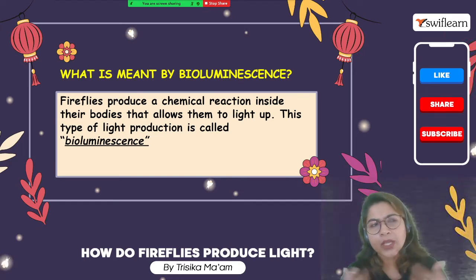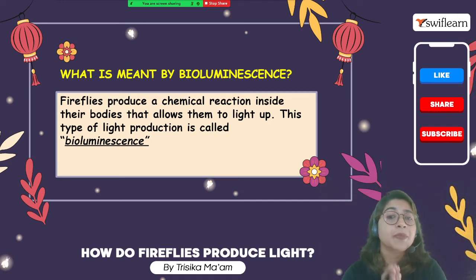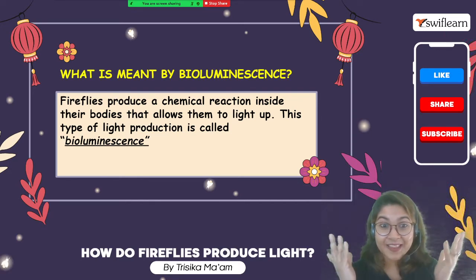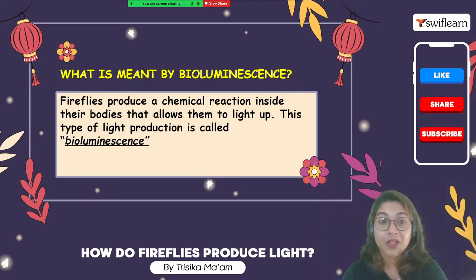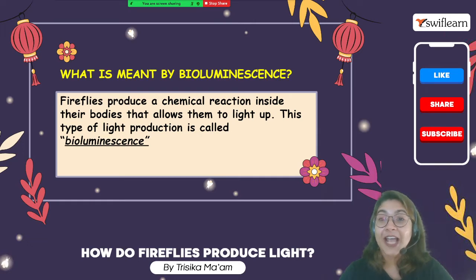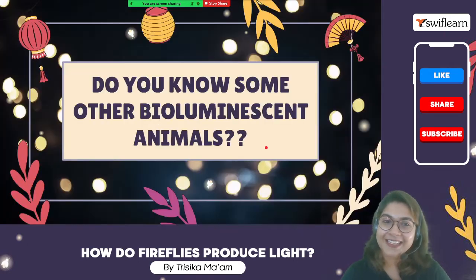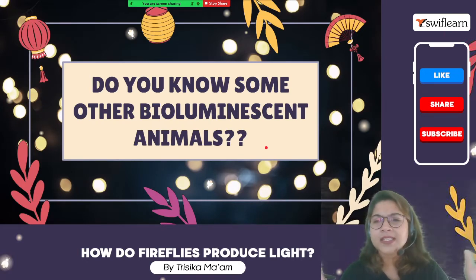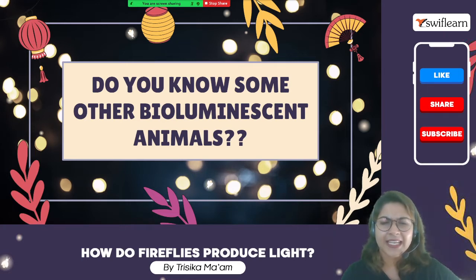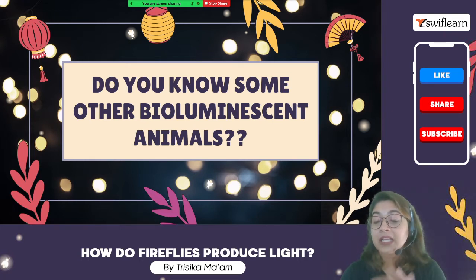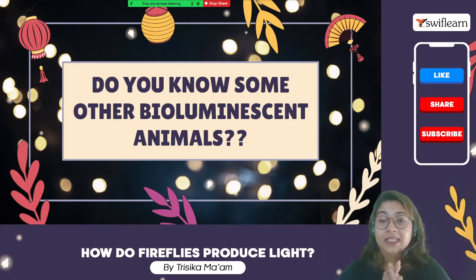How do they produce the light? We cannot produce light from our body, so there must be something special within their body — a chemical reaction. One type of chemical reaction happens within their body which helps them produce the light. Other bioluminescent animals are mostly marine — found under the ocean — including certain bacteria, algae, crustaceans, jellyfish, and squid.